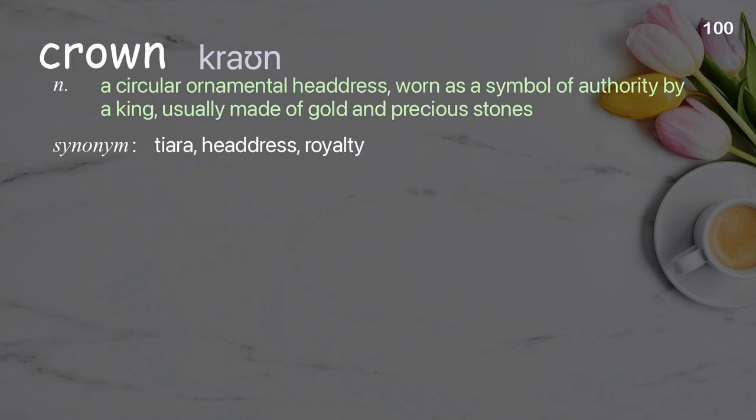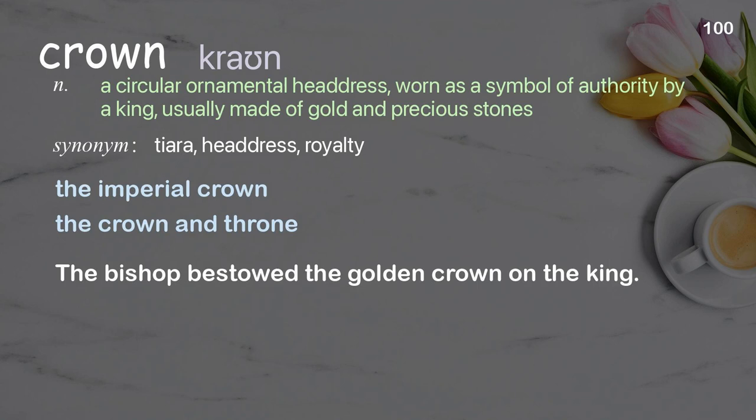Crown: A circular ornamental headdress worn as a symbol of authority by a king, usually made of gold and precious stones. Examples: The imperial crown. The crown and throne. The bishop bestowed the golden crown on the king.